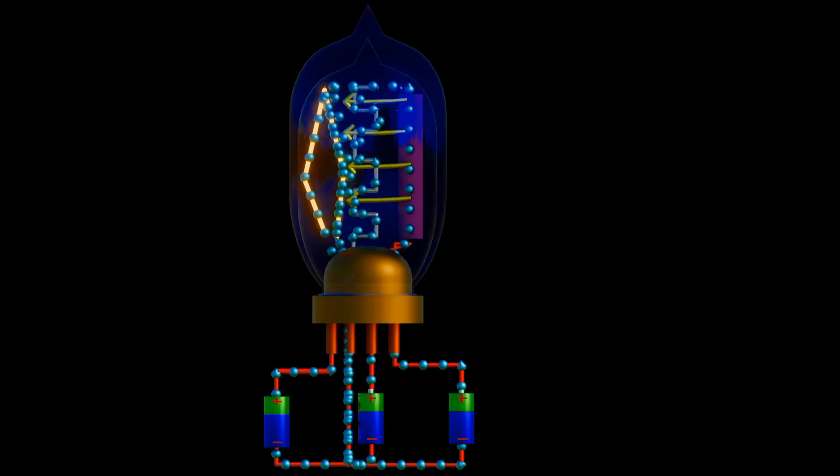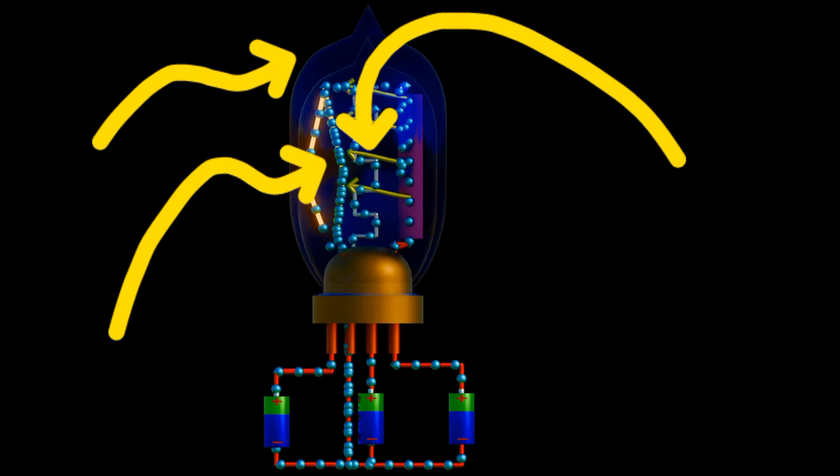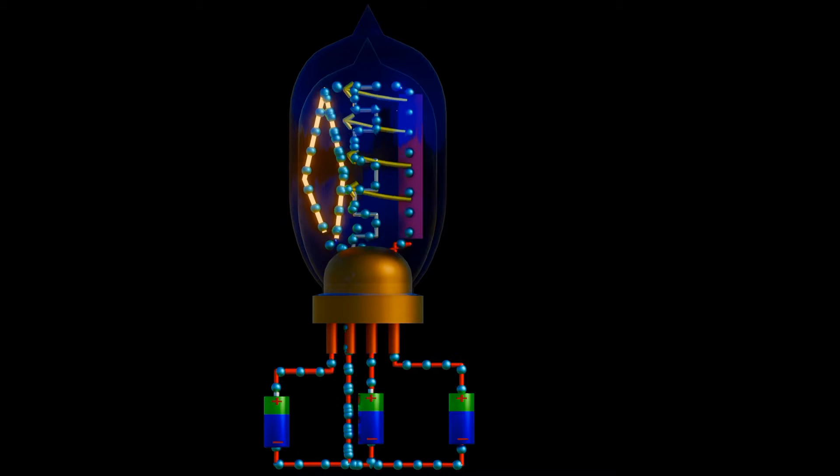Early tubes mimicked Edison's configuration, which used a glass housing, a filament to provide electrons and an anode or plate operating at a positive electrical charge to collect emitted electrons.